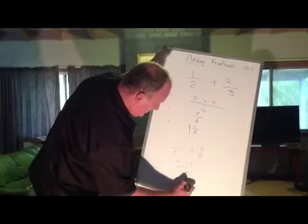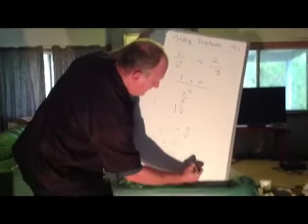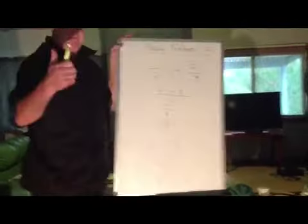Oh, twenty-three out of twenty, which equals one and three over twenty. Okay, easy.